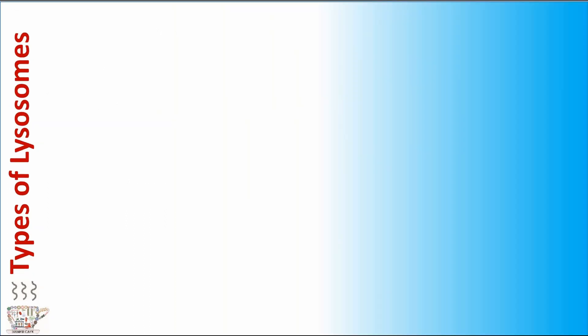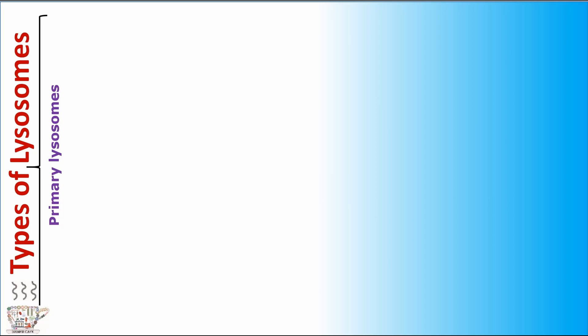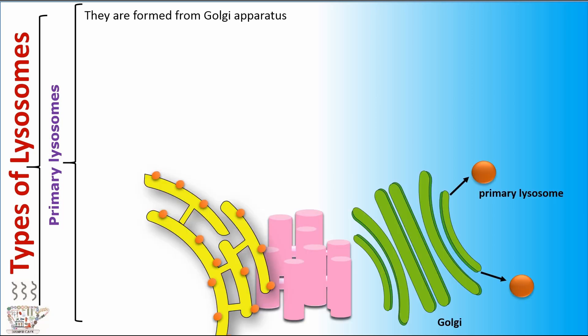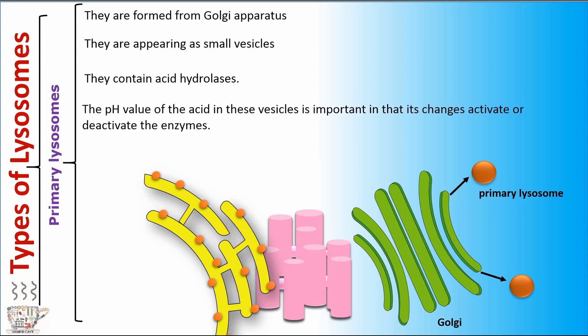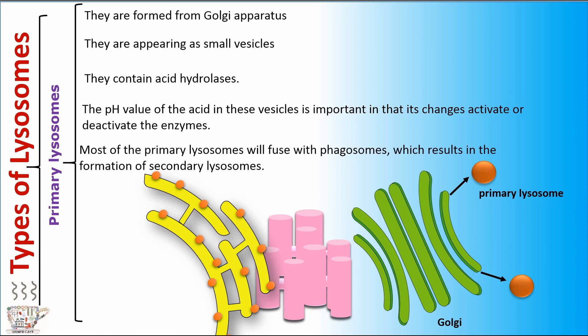Types of lysosomes. There are two types of lysosomes. The first type is primary lysosomes. They are formed from the Golgi apparatus and appear as small vesicles. They contain acid hydrolases. The pH value of the acid in these vesicles is important in that its changes activate or deactivate the enzymes. Most of the primary lysosomes will fuse with phagosomes, which results in the formation of secondary lysosomes.